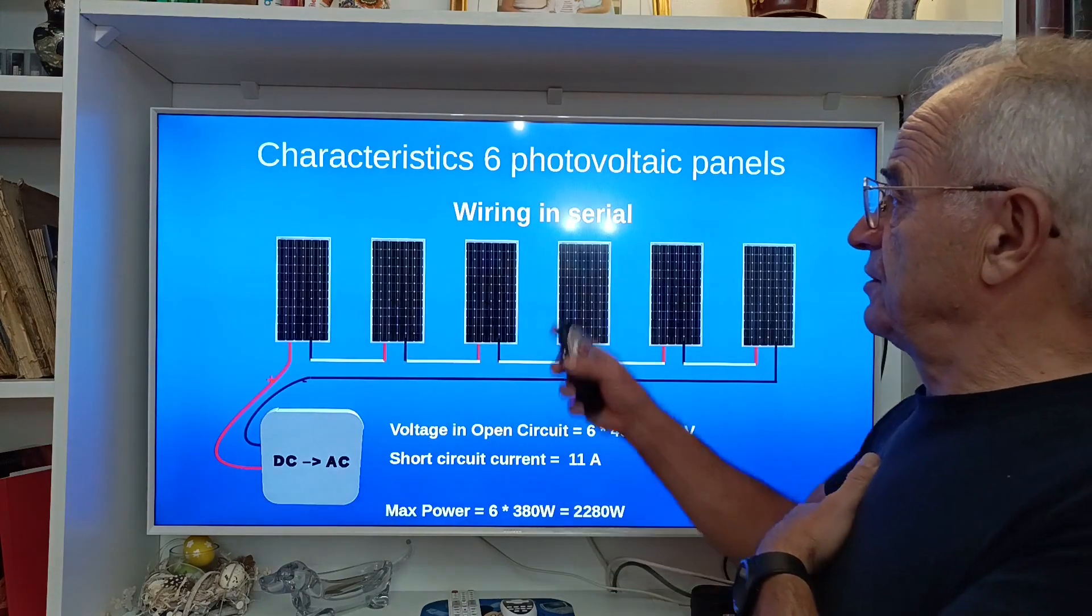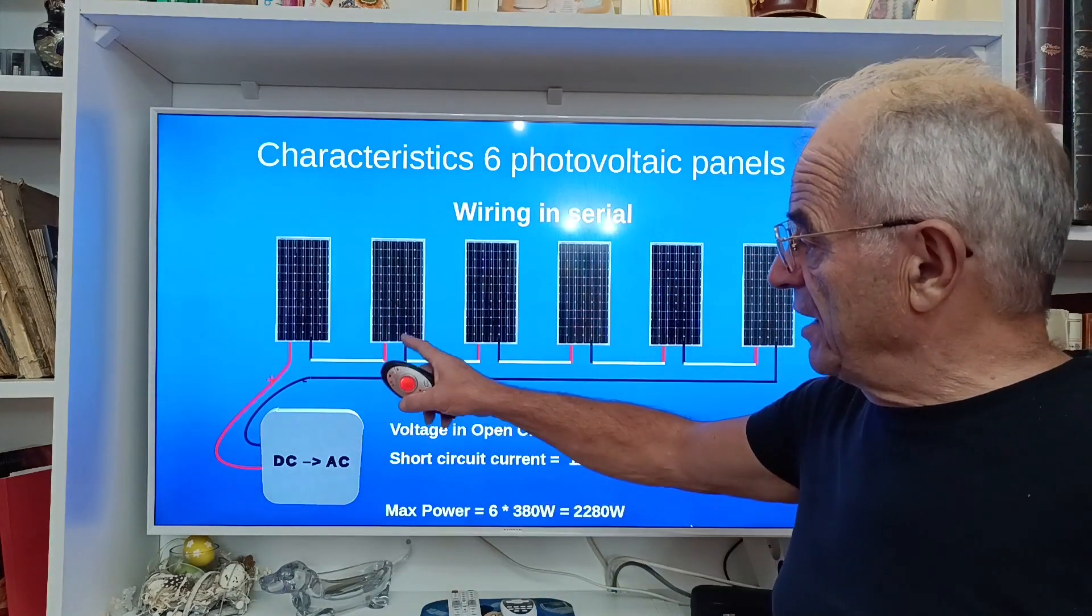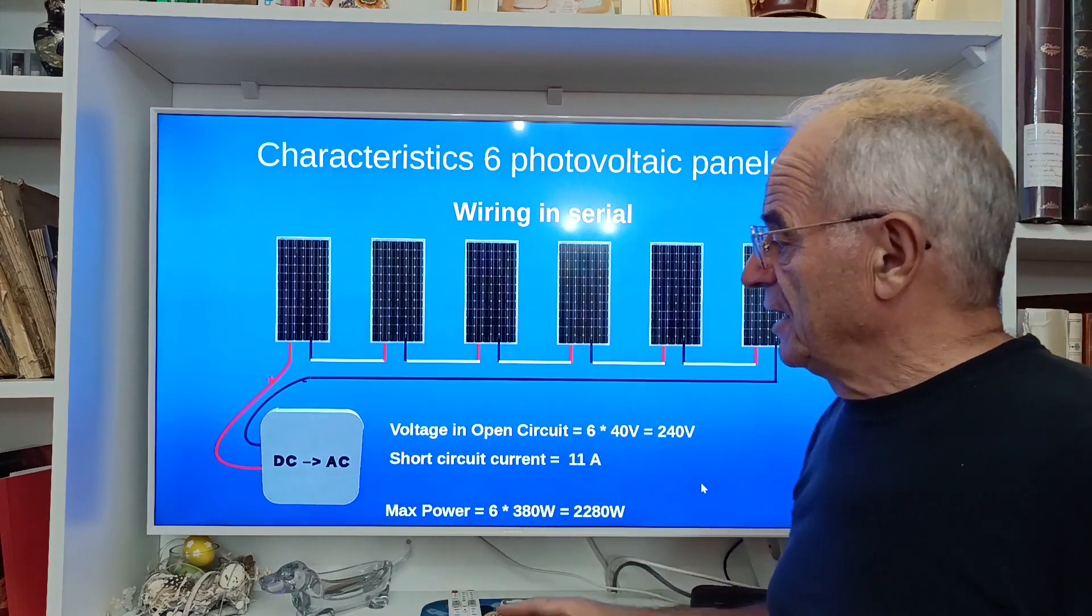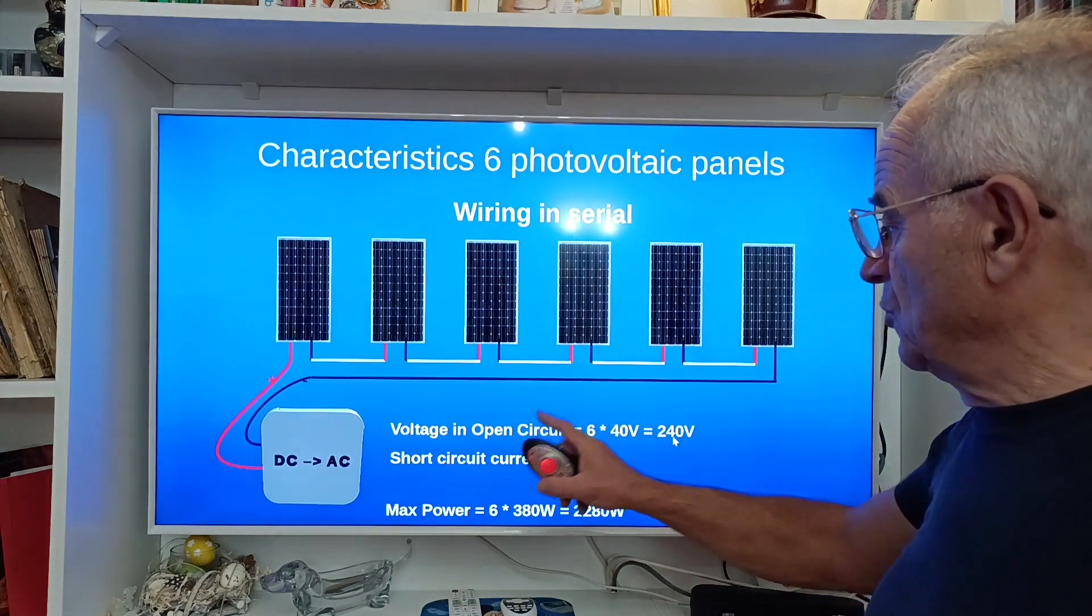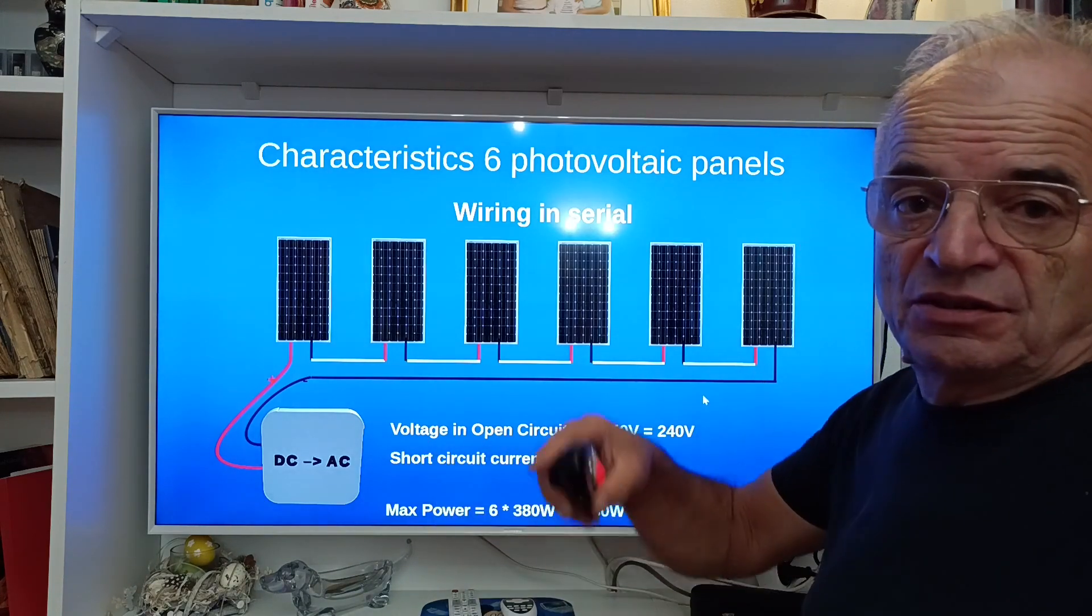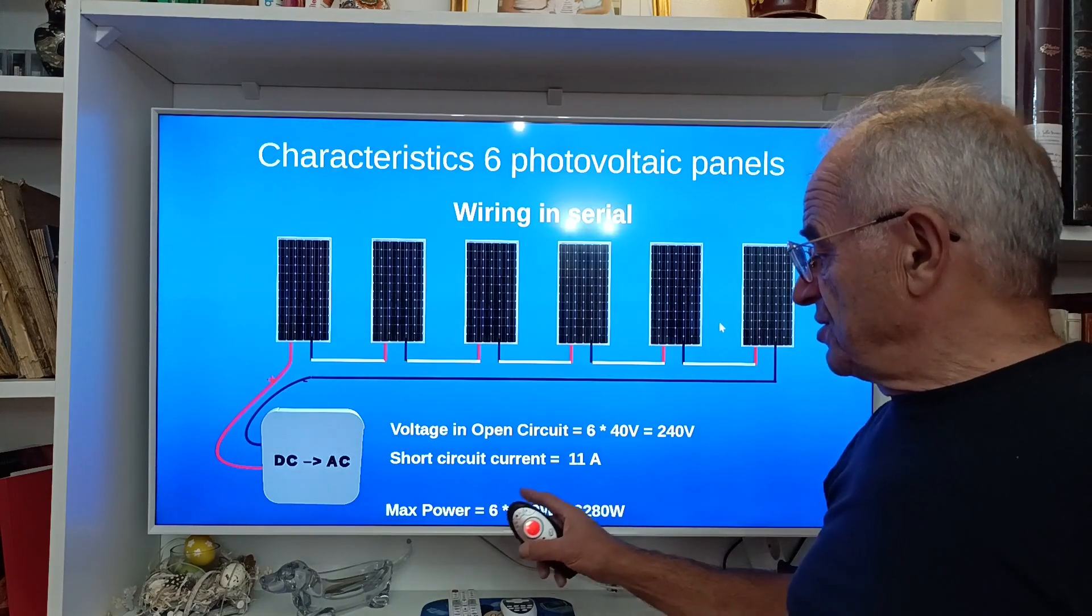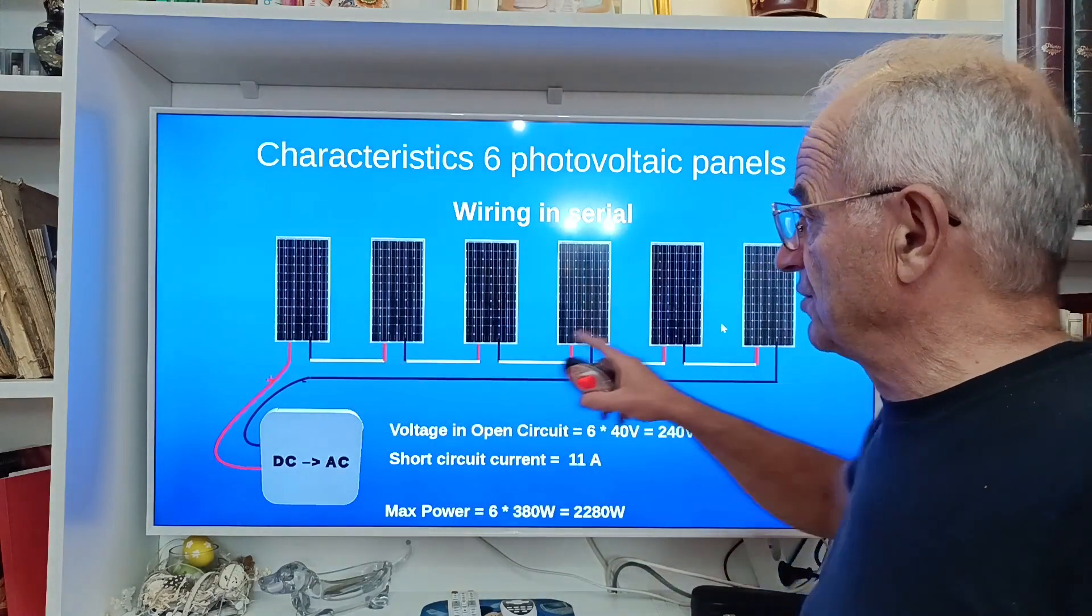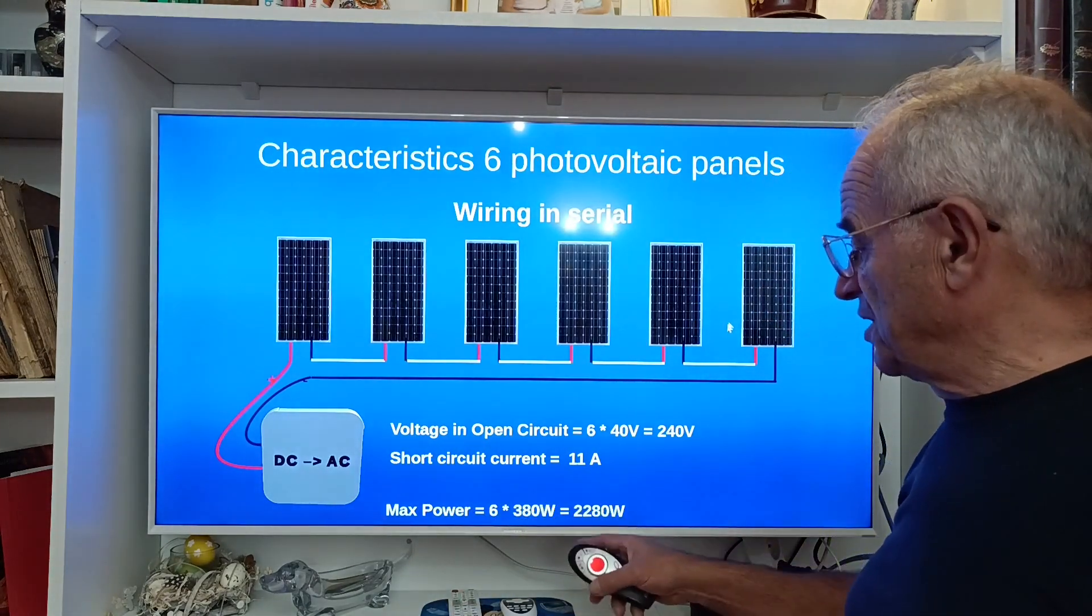Another way to connect all six panels is to wire them in serial, so we connect the minus of one panel to the positive point of the other and so on, all in serial, and we connect to the DC to AC converter. In open circuit we'll have six times 40 volts because in that case you add the different voltages of these six panels, so we obtain 240 volts. In short circuit we have 11 amps, the current of one panel, because they are all in serial.